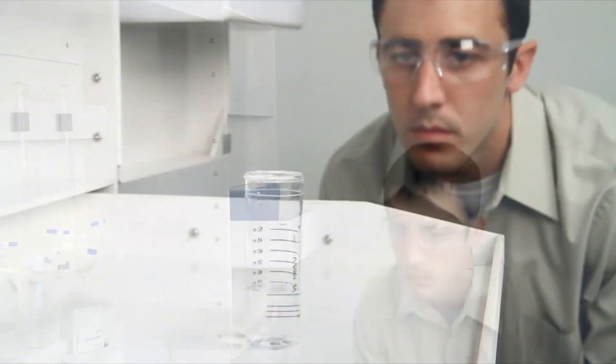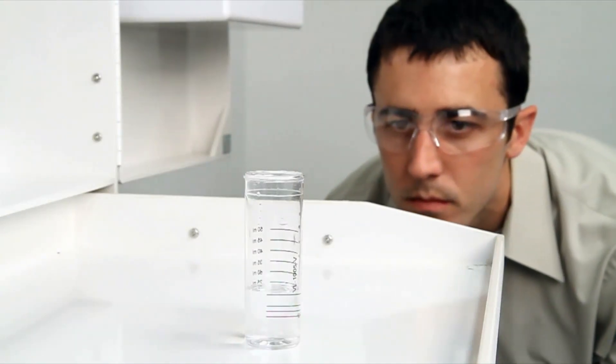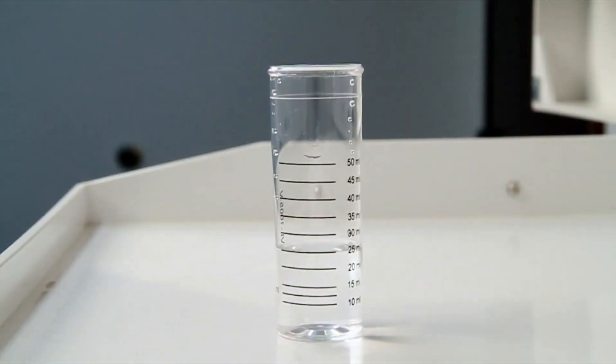When performing a drop count titration, a white background can provide contrast to better see the color changes. A cabinet tray or a white paper towel can provide that contrast.